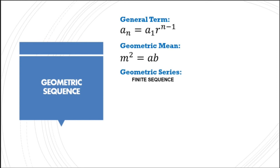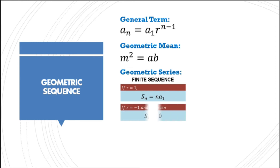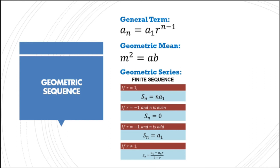For geometric series, we have formulas for both finite and infinite sequences. For the finite sequence: if r equals 1, the formula is S sub n equals n multiplied by a sub 1. If r equals negative 1 and n is even, the value of the series is automatically 0. If r equals negative 1 and n is odd, the value of the series equals a sub 1, the first term. If r is not equal to 1, the formula is S sub n equals (a sub 1 minus a sub n times r) all over (1 minus r).